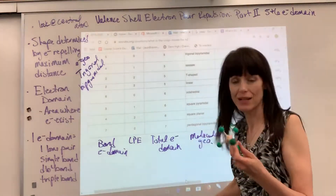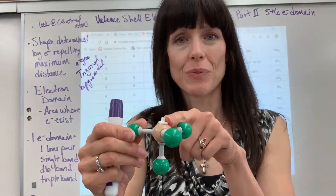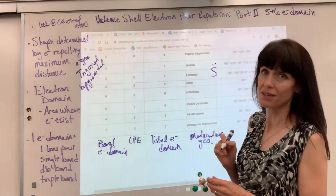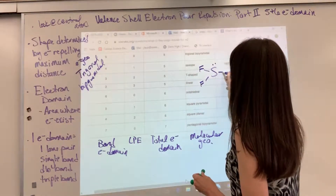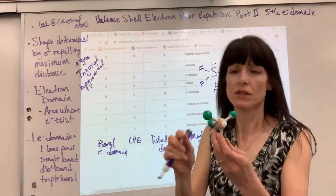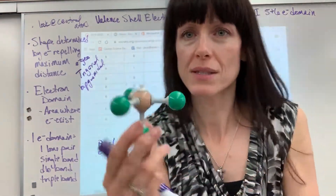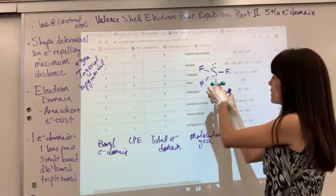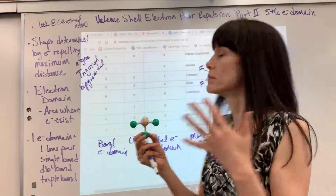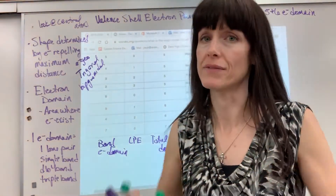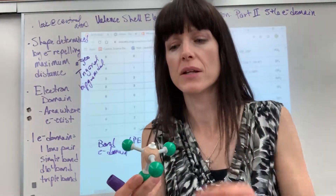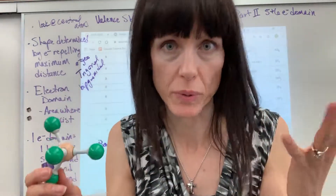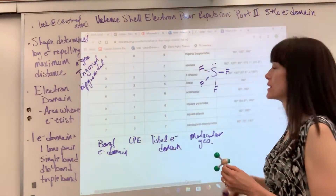We're still going to have five electron domains, but this time we add one lone pair. The example is sulfur tetrafluoride, SF₄. Sulfur has one lone pair, and then four fluorine atoms. There's your lone pair, the three fluorines in the middle form a triangle, and then there's one fluorine at the bottom. This shape is called seesaw — like a playground seesaw going back and forth. Memorize that name for the seesaw shape.